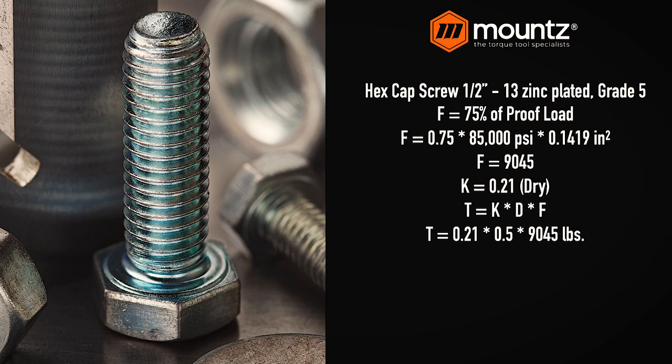Using our K-nut factor, we can develop what our torque specification should be. If we take a look at our force — which we want to be 75% of the proof load — we multiply that times the proof load of 85,000 psi, multiplied by the tensile stress area at 0.1419 squared. This is going to equal 9,045 pounds of force that is needed for this application.